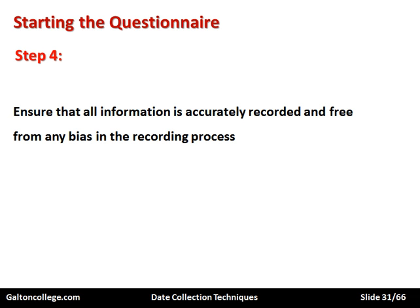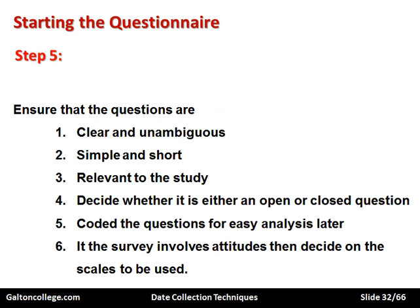Step four: ensure that all the information is accurately recorded and free from bias in the recording process. If it's biased, it's worthless — it's misleading and can actually be dangerous to the business, leading to bad decision-making. Step five: ensure that the questions are clear and unambiguous, simple and short, easily understood, and relevant to the study. They must be either open-ended or closed-ended as appropriate, tested out in the pre-test or pilot survey, and coded for easy analysis.